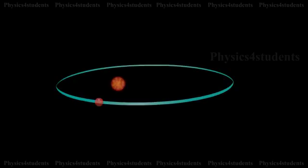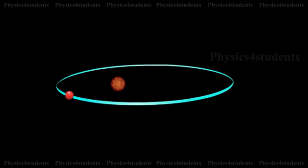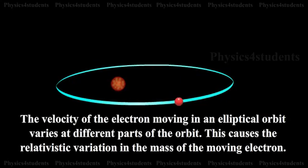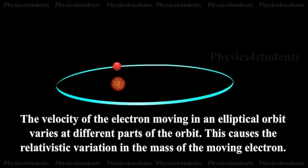According to Sommerfield, the path of an electron around the nucleus in general is an ellipse with the nucleus at one of its foci. The velocity of the electron moving in an elliptical orbit varies at different parts of the orbit, which causes the relativistic variation in the mass of the moving electron.